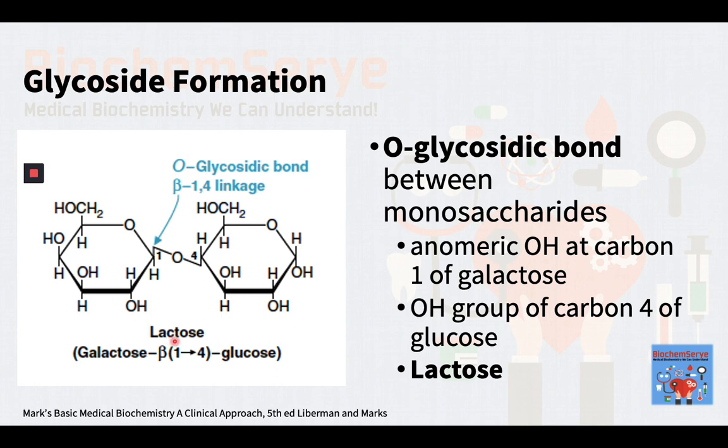Likewise, the anomeric group of a sugar can react either with an NH2 or an NH group, which yields, this time, an N-glycoside. N-glycosidic bonds occur in nucleotides and in glycoproteins. We will see this in the next slide.